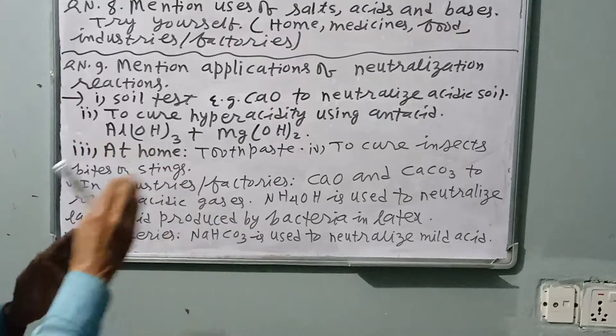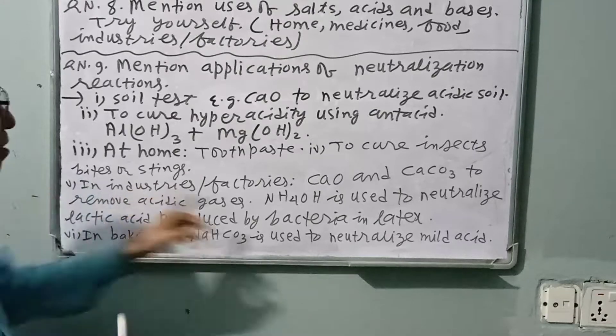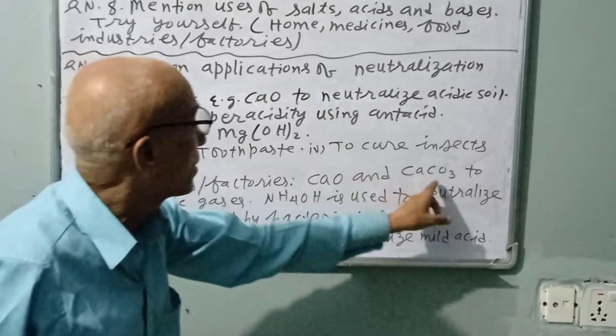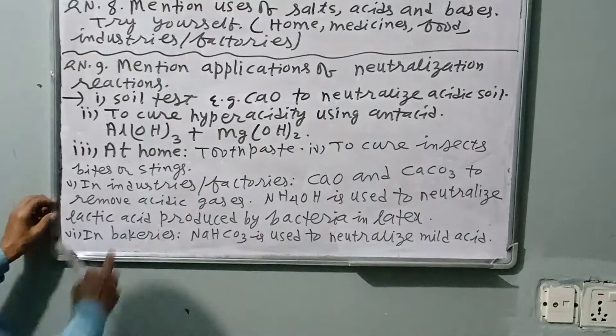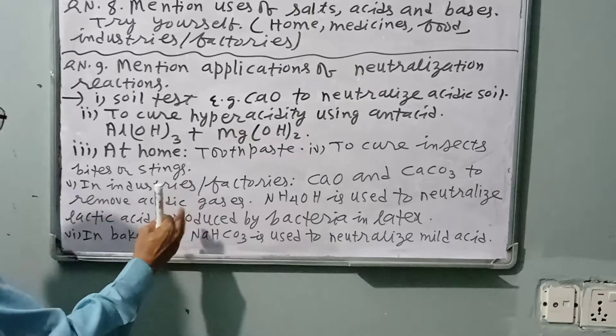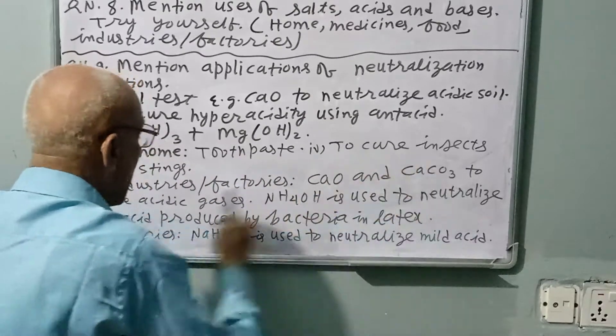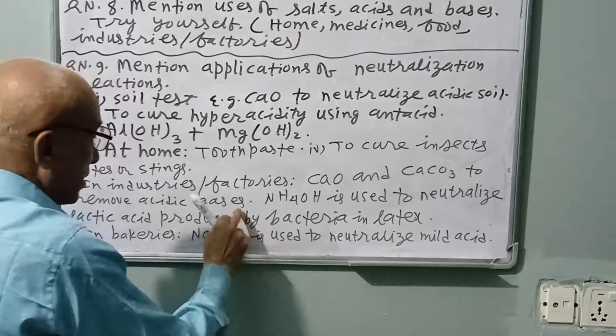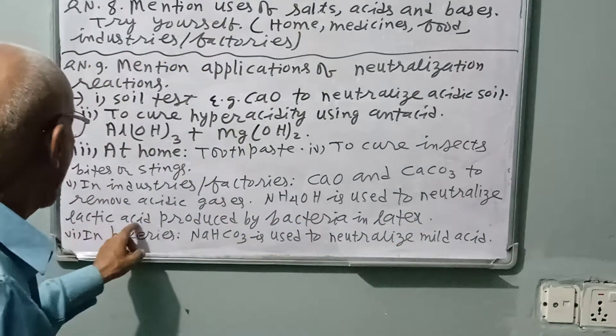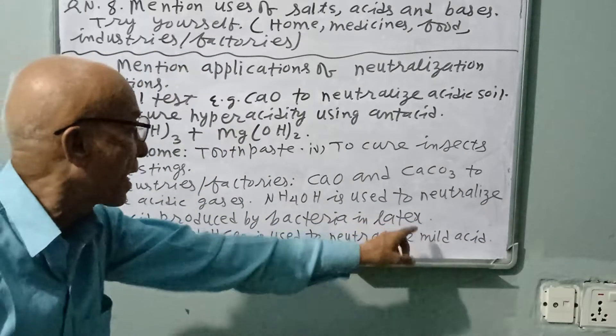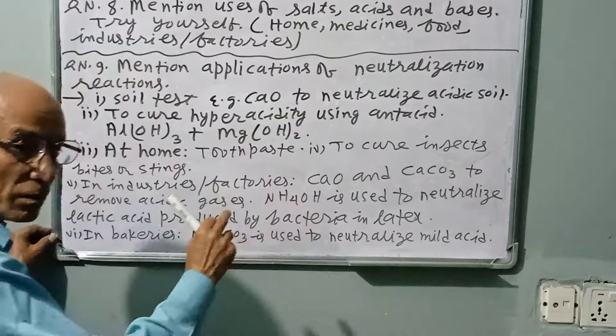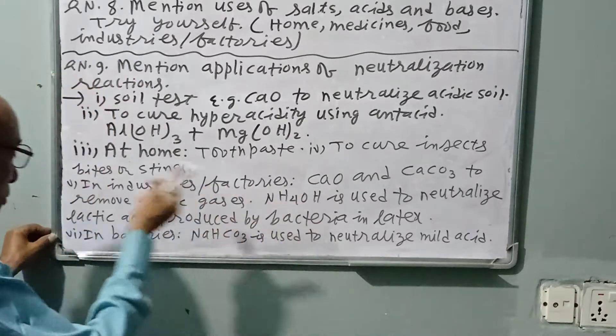In industries or factories, this is very important. Calcium oxide (CaO) and calcium carbonate (CaCO3) are used to remove acidic gases in the industry. These gases are not important; they have to be removed. Ammonium hydroxide is used to neutralize lactic acid produced by bacteria in latex. Use base to remove acidic effect, acid to remove basic effect.